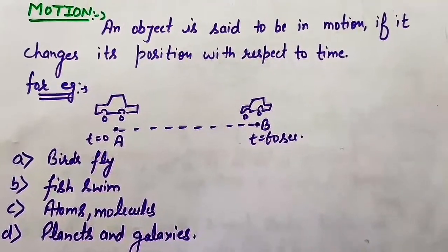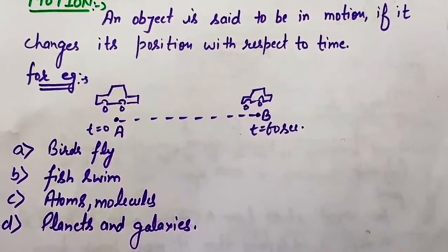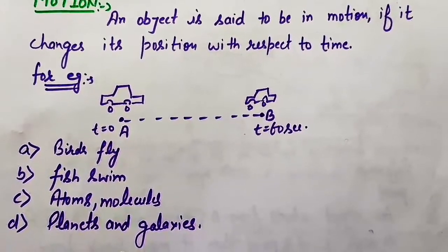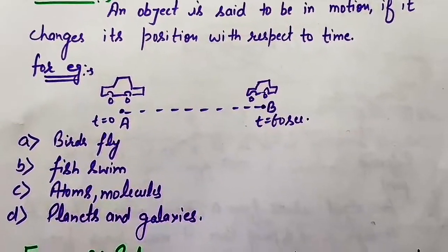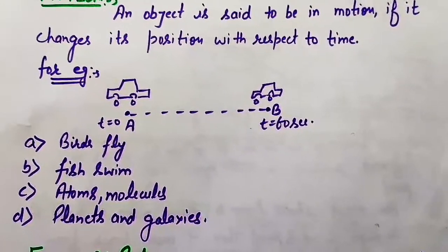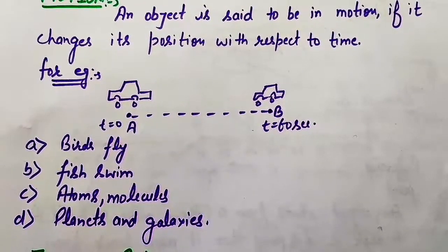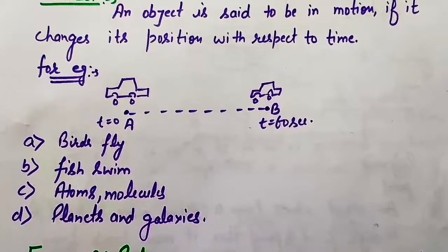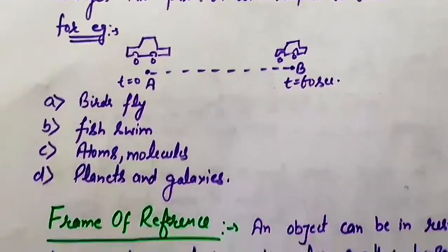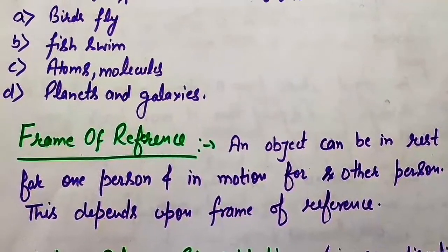In day to day life you can have several examples in which you can say that yes, this object is in motion — if any object changes its position from one point to another over time, then that is an example of motion. Now a very important concept here is frame of reference.